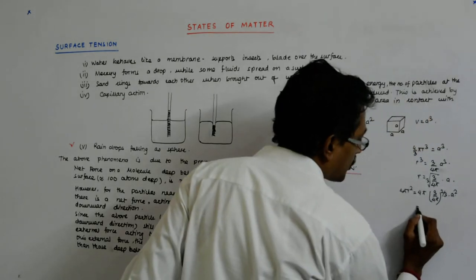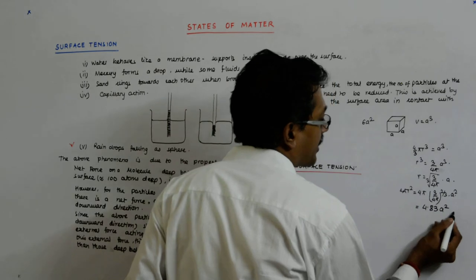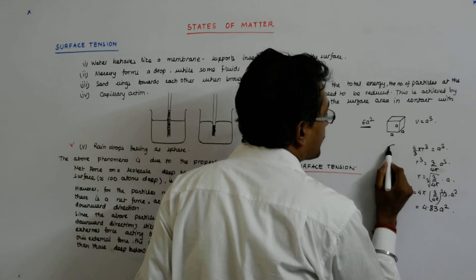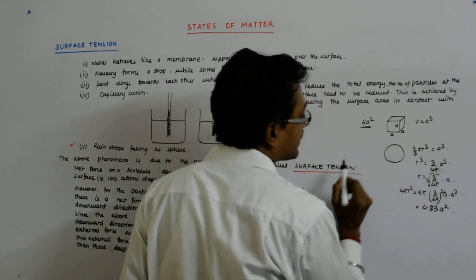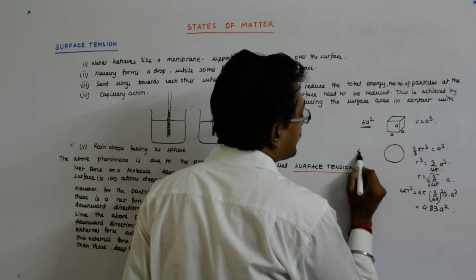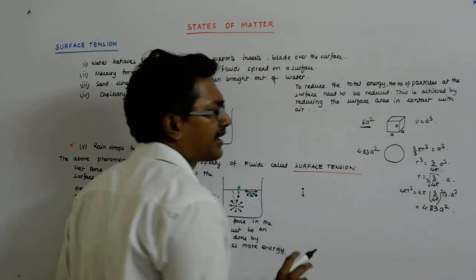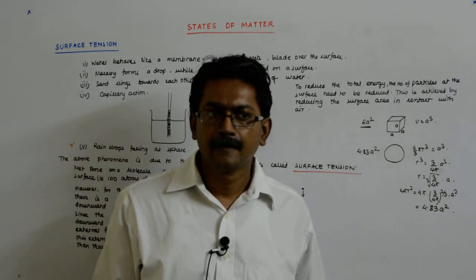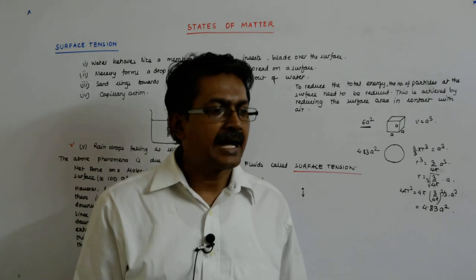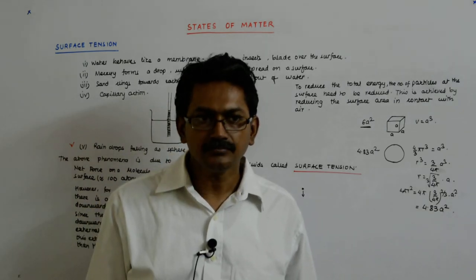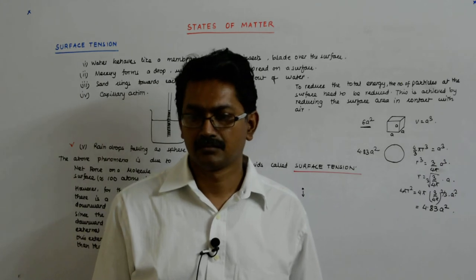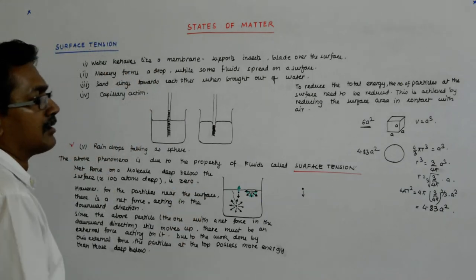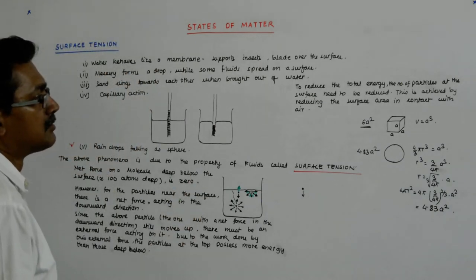So this is only 4.83 a square, while this was occupying an area. I am talking about a sphere. The whole thing contained in a sphere will have a surface area of only 4.83 a square and it will accommodate in the full volume. You understand? So it is no wonder that it becomes spherical.